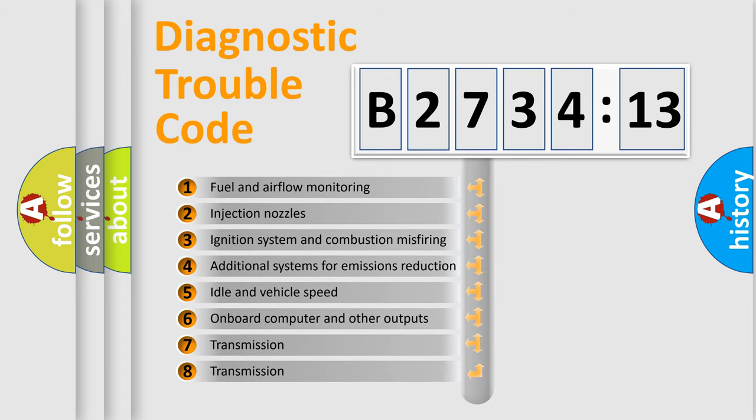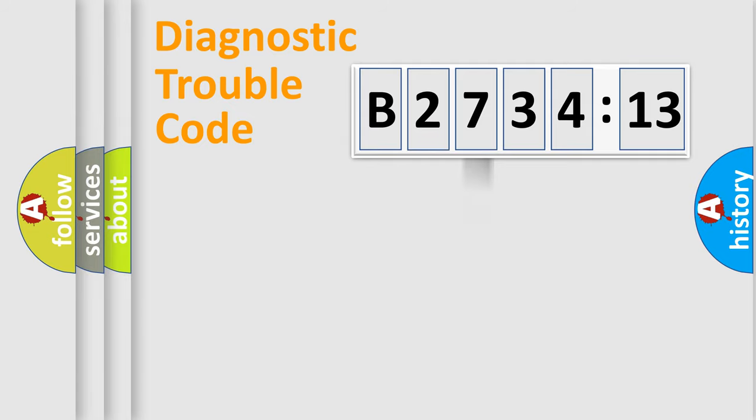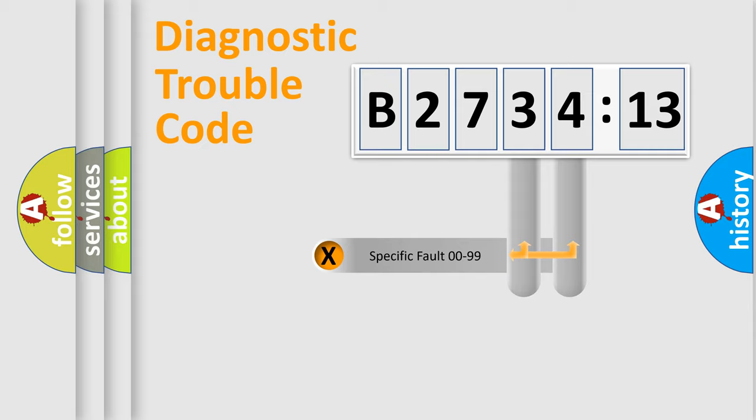The third character specifies a subset of errors. The distribution shown is valid only for the standardized DTC code.